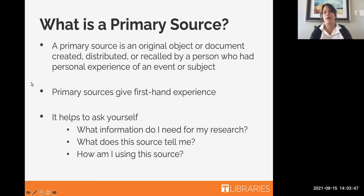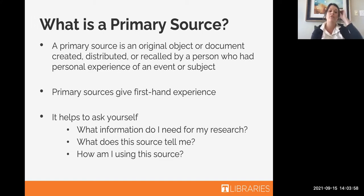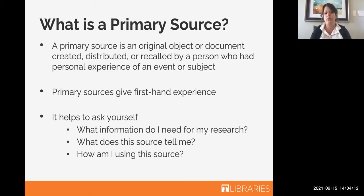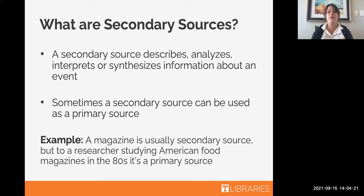So what is a primary source? A primary source is an original object or document that's created, distributed, or collected by a person who had personal experience of an event or subject. Essentially, primary sources give first-hand experience of a topic. When using primary sources, it's helpful to ask yourself: what information do you need for your research, what is the source telling you, and how are you using the source? This matters because sometimes primary sources can be used as secondary sources, and vice versa.